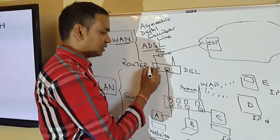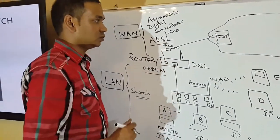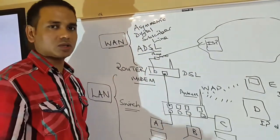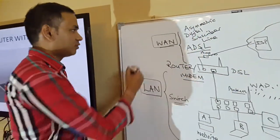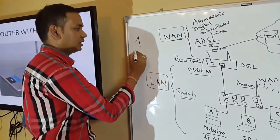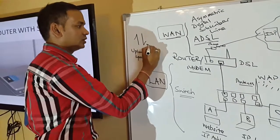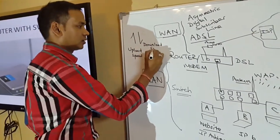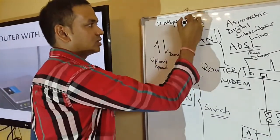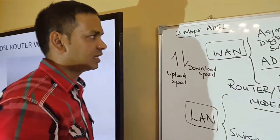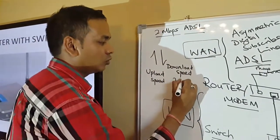The internet connection comes in via an ADSL line — asymmetric digital subscriber line — and that line comes to the router. Since this line is coming in, the router is also performing the function of a modem — modulator/demodulator. ADSL is called asymmetric because an ADSL circuit has two speeds: one called the upload speed and one called the download speed. When your ISP advertises a 2 Mbps ADSL line, that 2 Mbps refers to the download speed.